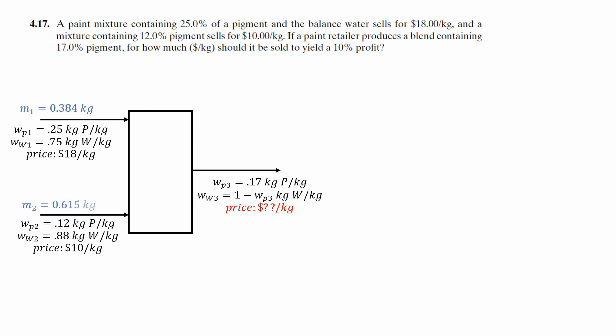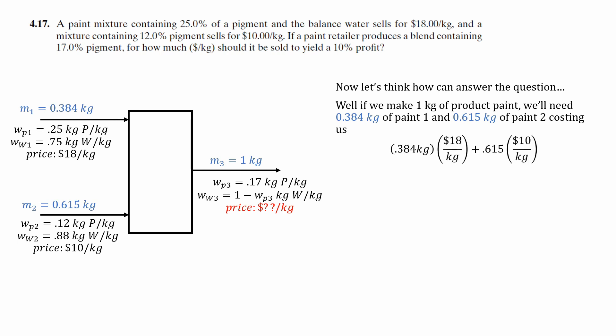Now we can replace these in our diagram. We have our nice calculations. And now let's think how we can answer the question. What should we sell this for to yield 10% product? Well, if we make a kilogram of product of paint, we'll need 0.384 kilograms of paint one and 0.615 kilograms of paint two, costing us about $13.06 to make just one kilogram of paint.